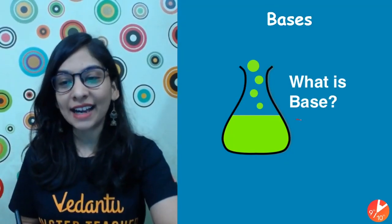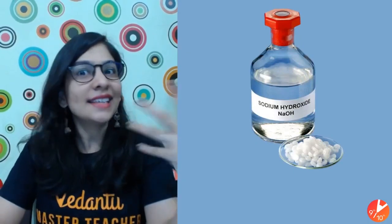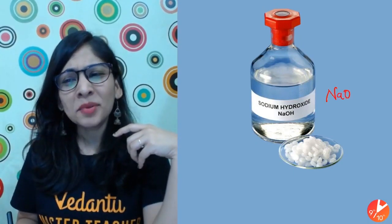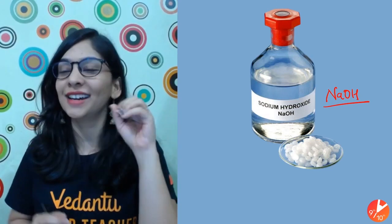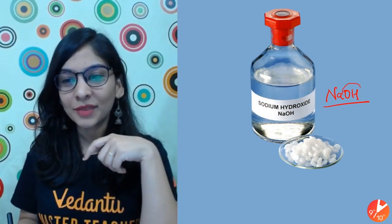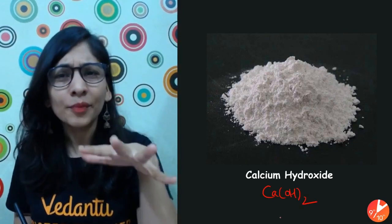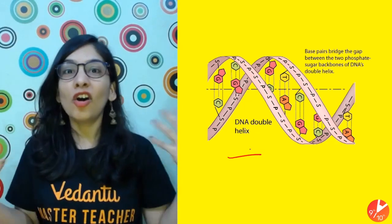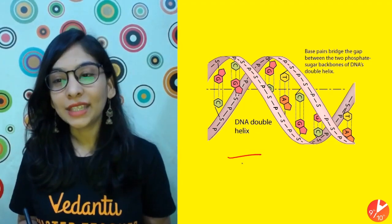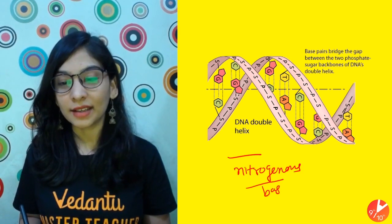Now let's talk about what exactly a base is. The base kya hai? I can give some examples — sodium hydroxide (NaOH) is a base, calcium hydroxide is also a base. Can you see what is common between the two? Also, your DNA has some special bases called nitrogenous bases — nitrogen-based bases. So a base is something that reacts with the hydronium ion to give salt and water.